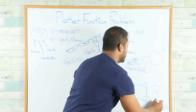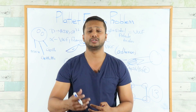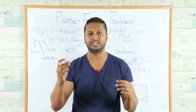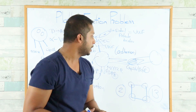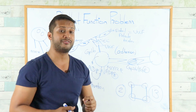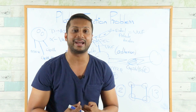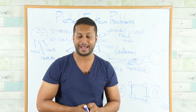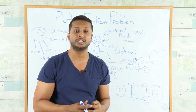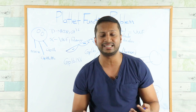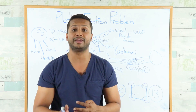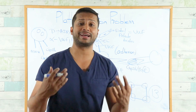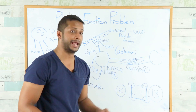Once the primary platelet plug begins to form, it also activates the coagulation cascade. Subendothelial collagen directly activates Factor 12, starting the intrinsic cascade. Meanwhile, damage to endothelial cells releases thromboplastin, which activates Factor 7 and the extrinsic pathway. Both pathways eventually produce Factor 2, which forms the fibrin mesh.